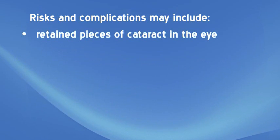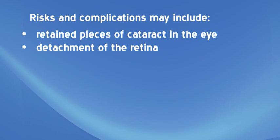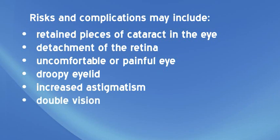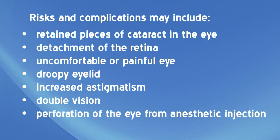Additional risks include retained pieces of cataract in the eye which may need to be removed surgically, detachment of the retina especially a high risk for very nearsighted patients, uncomfortable or painful eye, droopy eyelid, increased astigmatism, double vision, and perforation of the eye from anesthetic injection. These and other complications may result in poor vision, total loss of vision, or even loss of the eye in rare situations. Additional surgery may be required to treat these complications.